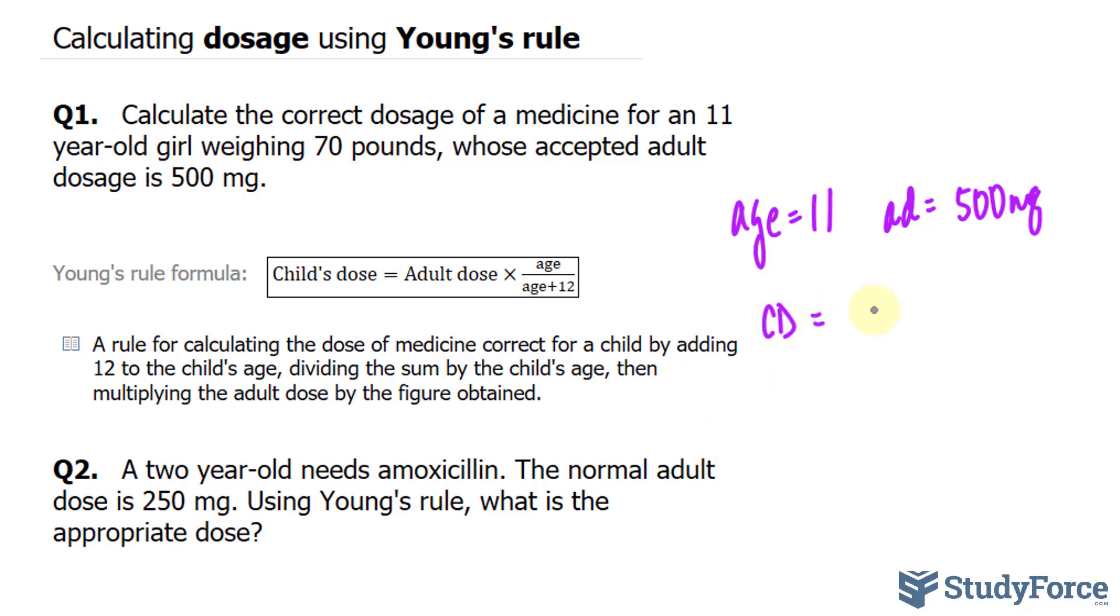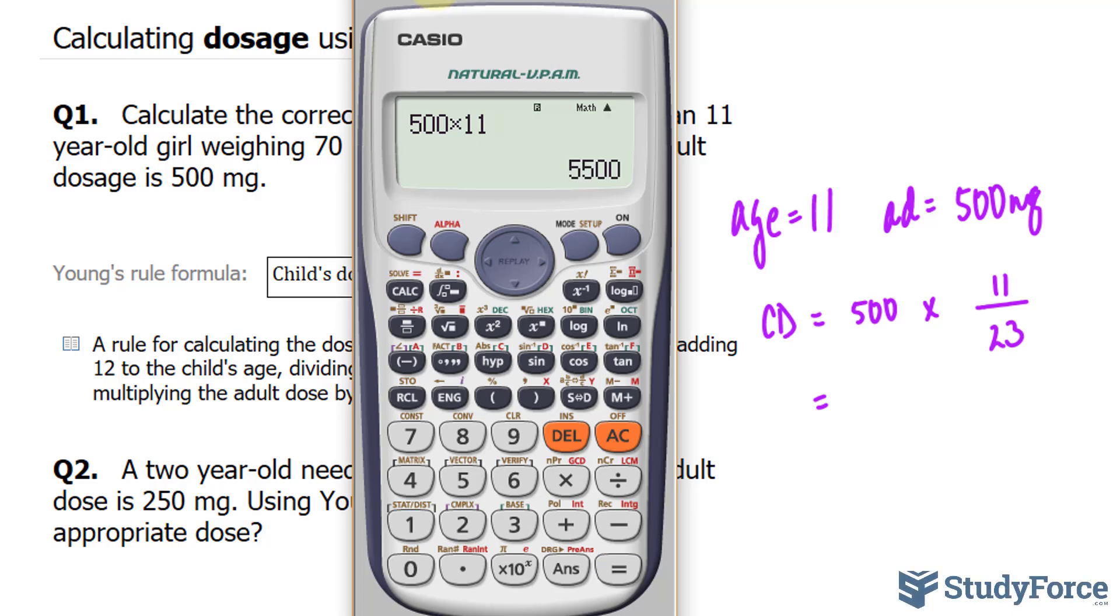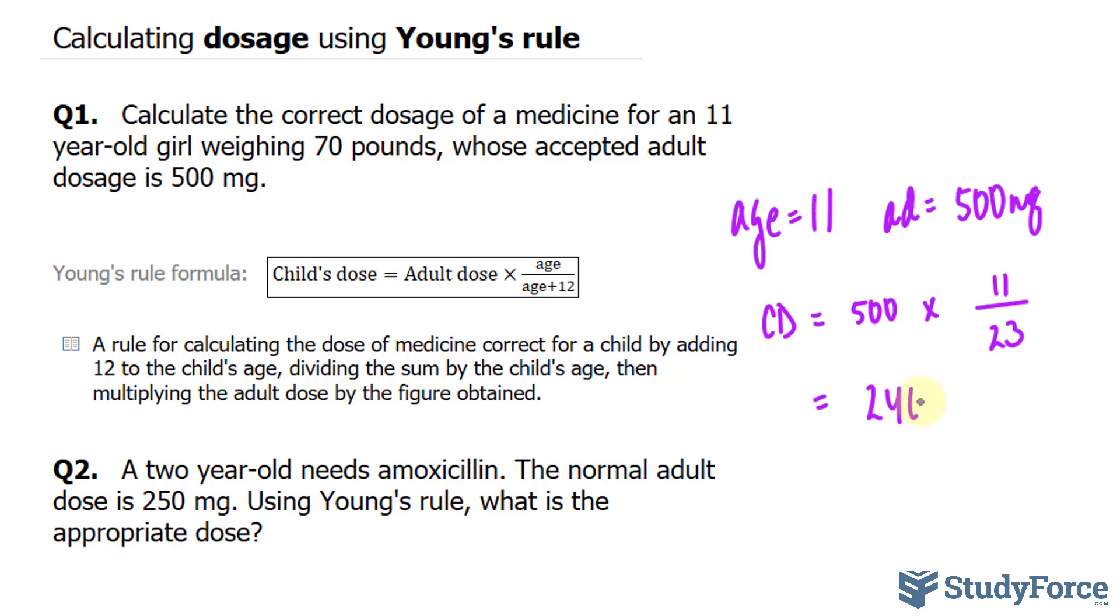is equal to 500 times, and over here, you'll take the number 11, and you'll divide it by 11 plus 12. That's equal to 23. Using our calculator, we'll take 500 and multiply that by 11 divided by 23. We end up with 239, rounded up to 240 mg. So the equivalent dosage for this 11-year-old girl is 240 mg.